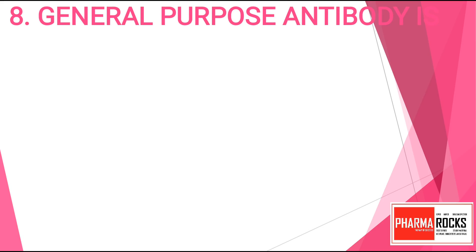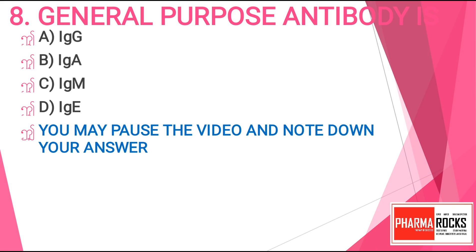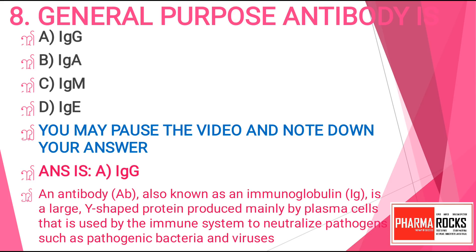Question number 8. General purpose antibody is: Option A. IgG. Option B. IgA. Option C. IgM. Or Option D. IgE. You may pause the video and note down your answer. The correct answer for this question is IgG, Option A. An antibody, denoted as AB, also known as an immunoglobulin (Ig), is a large Y-shaped protein produced mainly by plasma cells, used by the immune system to neutralize pathogens such as pathogenic bacteria and viruses.